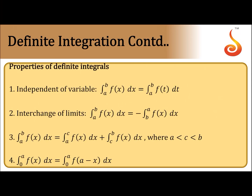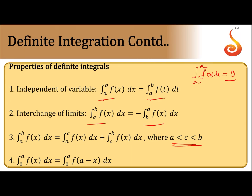Important properties of definite integrals: (1) ∫ₐᵃ f(x) dx = 0 when lower and upper limits are the same. (2) The variable of integration is a dummy variable — ∫ₐᵇ f(x) dx = ∫ₐᵇ f(t) dt. (3) Interchanging limits: ∫ₐᵇ f(x) dx = −∫ᵦₐ f(x) dx. (4) For any point c in [a, b]: ∫ₐᵇ f(x) dx = ∫ₐᶜ f(x) dx + ∫ᶜᵇ f(x) dx.